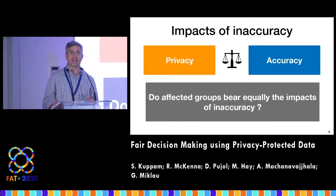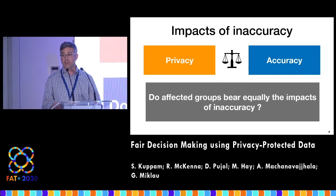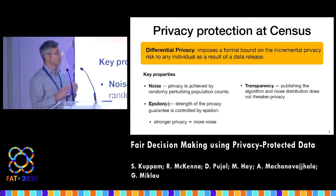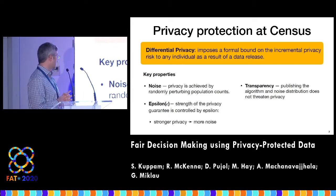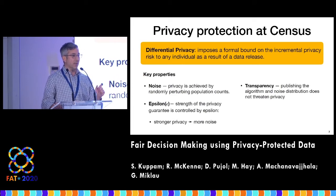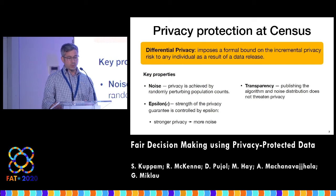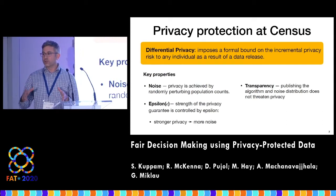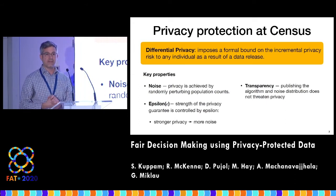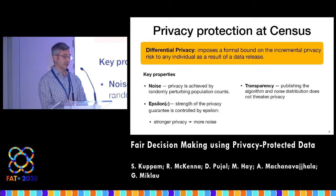Most of the setup I've described is not new — the Census Bureau has been doing this for many decades. But what is new is that they're revising their privacy protection methodology and starting to adopt differential privacy for some of the population statistics they release. Differential privacy is a formal model of privacy where noise is added to counts, and there's a parameter epsilon that controls the strength of the privacy guarantee — stronger privacy means more noise. Importantly, differential privacy supports transparency by allowing the description of the algorithm and, in many cases, the noise distribution to be analyzed outside the Census Bureau. The Census Bureau has already started to make public some of their algorithm descriptions and parameters.